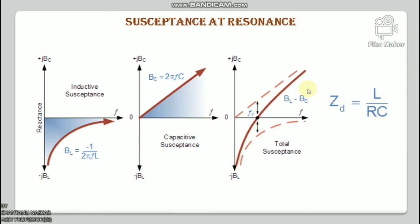We can see that at the resonant frequency point, where the curve crosses the horizontal axis, the total circuit susceptance is zero. Below the resonant frequency point, the inductive susceptance dominates the circuit, producing a lagging power factor.